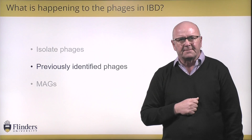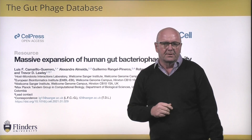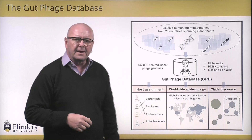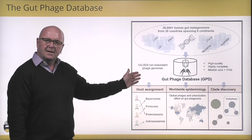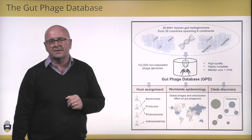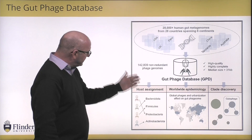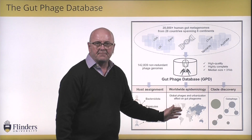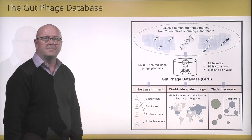What about other previously identified phages? There's a lovely paper from the Lawley Group published earlier this year in which they created a phage genome database from all the metagenomes they could find — about 30,000 metagenomes. It was a huge amount of work; they identified 142,000 non-redundant phages. In the paper they described host assignments, the epidemiology of these phages, and some new clades that they discovered.